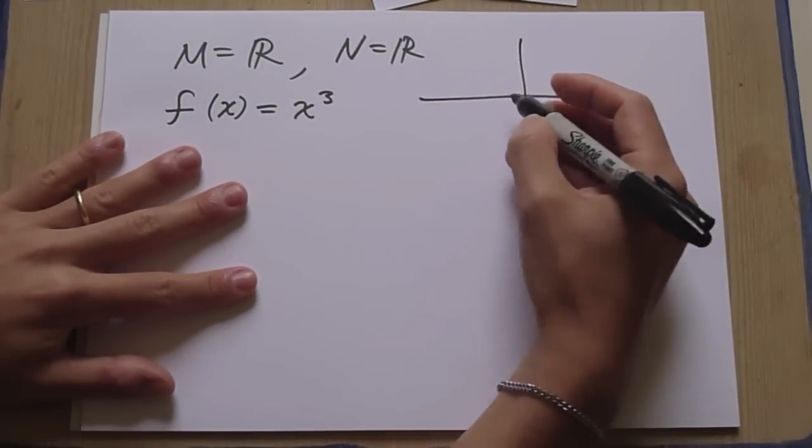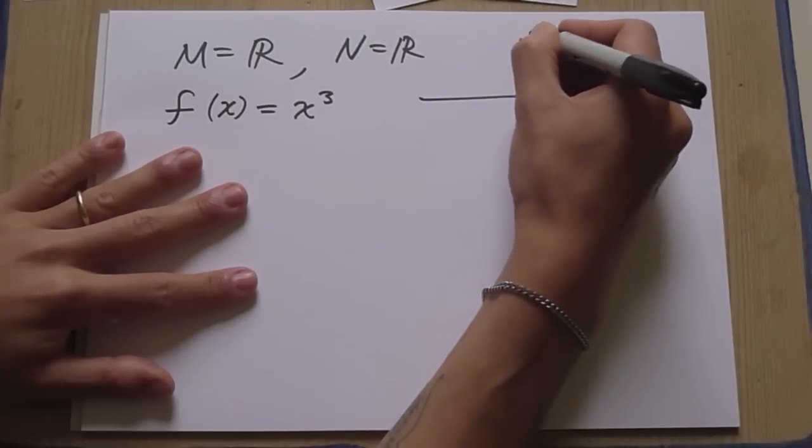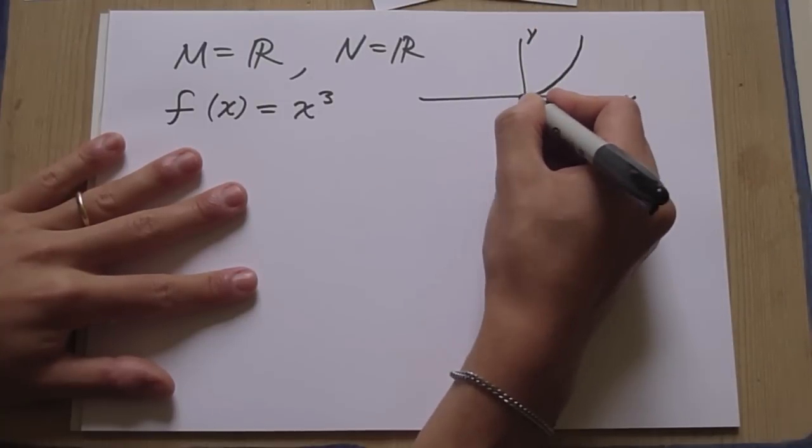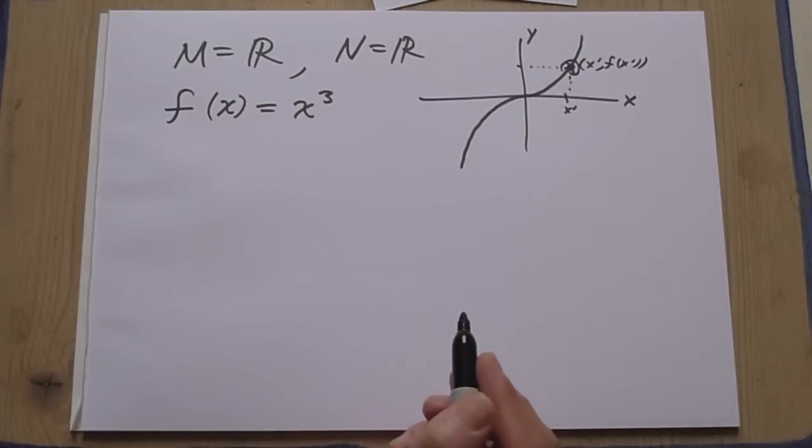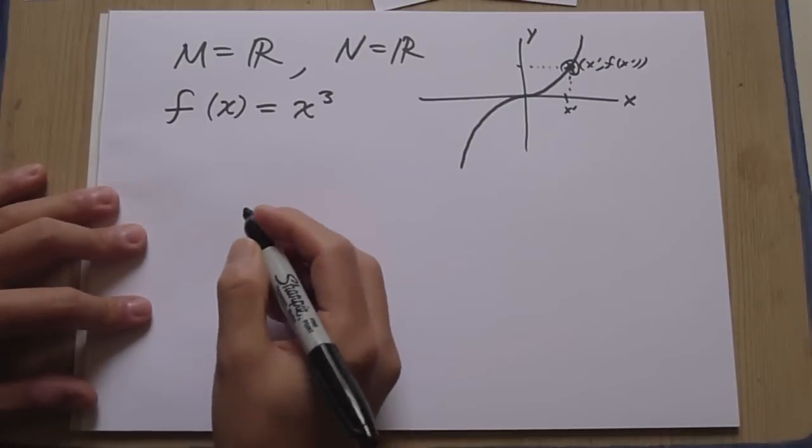Okay, this is a continuous function, right? If you graph it, it looks continuous. Here's X, here's Y. If you graph a point, you get something that looks like this. Anyway, this looks continuous, this function here, right?